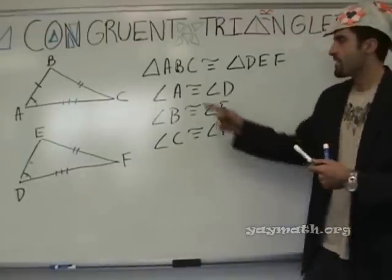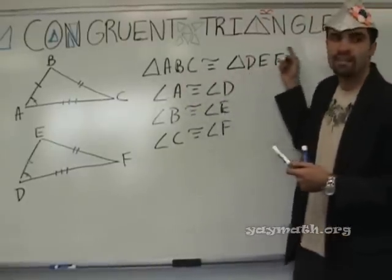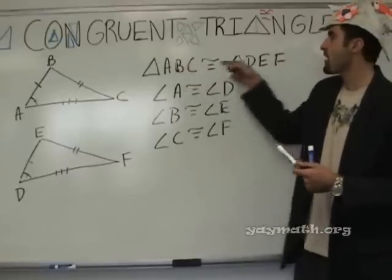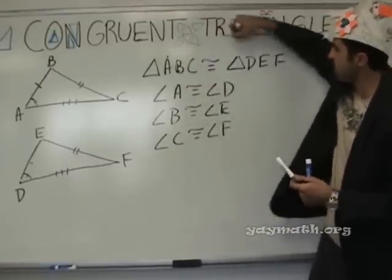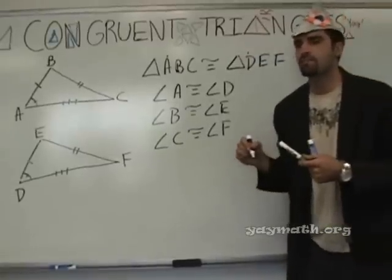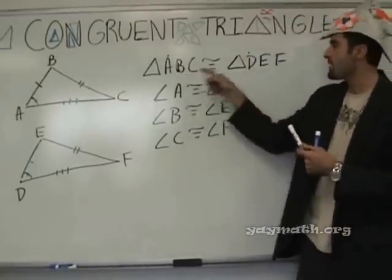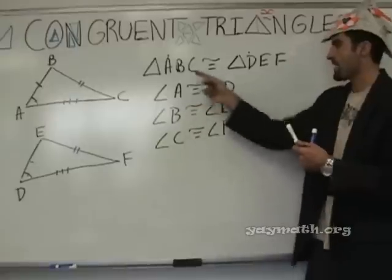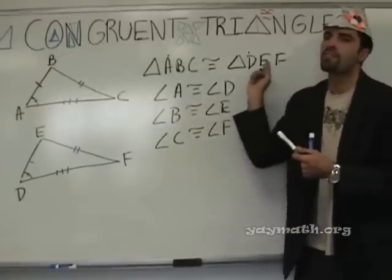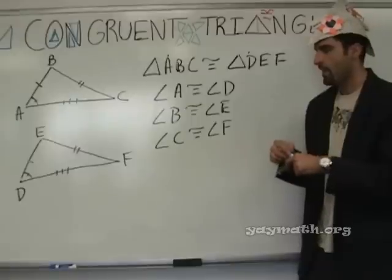You know what's coolest? The second you write a congruent statement, you can see that A is the same as D because they're both the first letter. You can say that B is the same as E, they're the second letter, and C is the same as F. So you actually don't even need the picture eventually, okay?